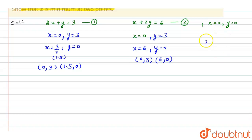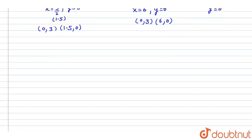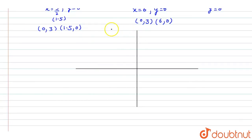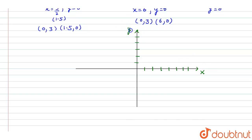Here X equal to 0 or Y equal to 0 means the origin. Now we have to draw a coordinate system to make the graph of these two equations. We take a gap of 1 between two numbers, marking 1 through 7 on the x-axis and y-axis.